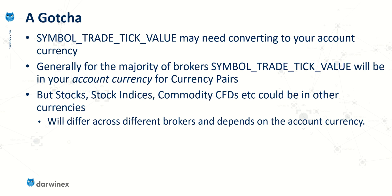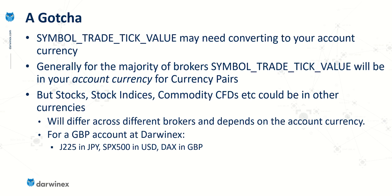Let me give an example for my own DarwinX account, which is in British pounds. If I were to trade the Nikkei (J225 index), the symbol trade tick value property will be in Japanese yen. If I trade the S&P 500, the value will be in US dollars. But if I trade the DAX, you might expect this to be in euros — but that is not the case. For a British pound account like mine, the DAX tick value is in British pounds. So you need to do your research to find out how your broker has defined these calculation currencies in their platform. Although I identified this as a gotcha back in episode eight, I didn't show how to resolve it — and so that's what I'm going to do now.